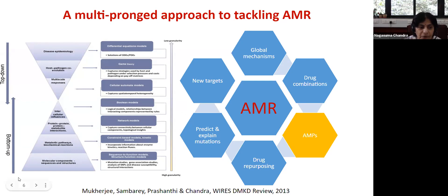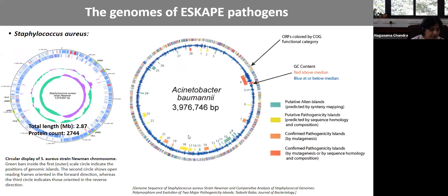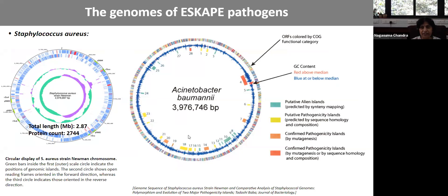Our approach is multi-pronged, combining a top-down and a bottom-up strategy — integrating bioinformatics, systems modeling, machine learning, and experimental testing of predictions. The emergence of pathogenic Acinetobacter baumannii is particularly problematic, aided by two factors: a remarkable ability to survive in a hostile environment for prolonged periods, and a remarkable ability to take up genetic material encoding drug resistance. For these reasons, A. baumannii has received a Priority 1 critical classification by the WHO for the development of new antibiotics.